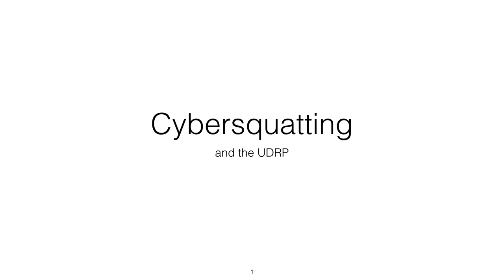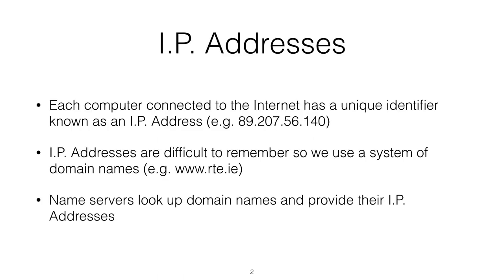In this video we're going to look at the practice of cyber squatting and we're going to see how the uniform dispute resolution procedure can be used to counteract this. As most of you know, each computer on the internet is identified with a unique identifier known as an IP address. IP addresses are difficult to remember.